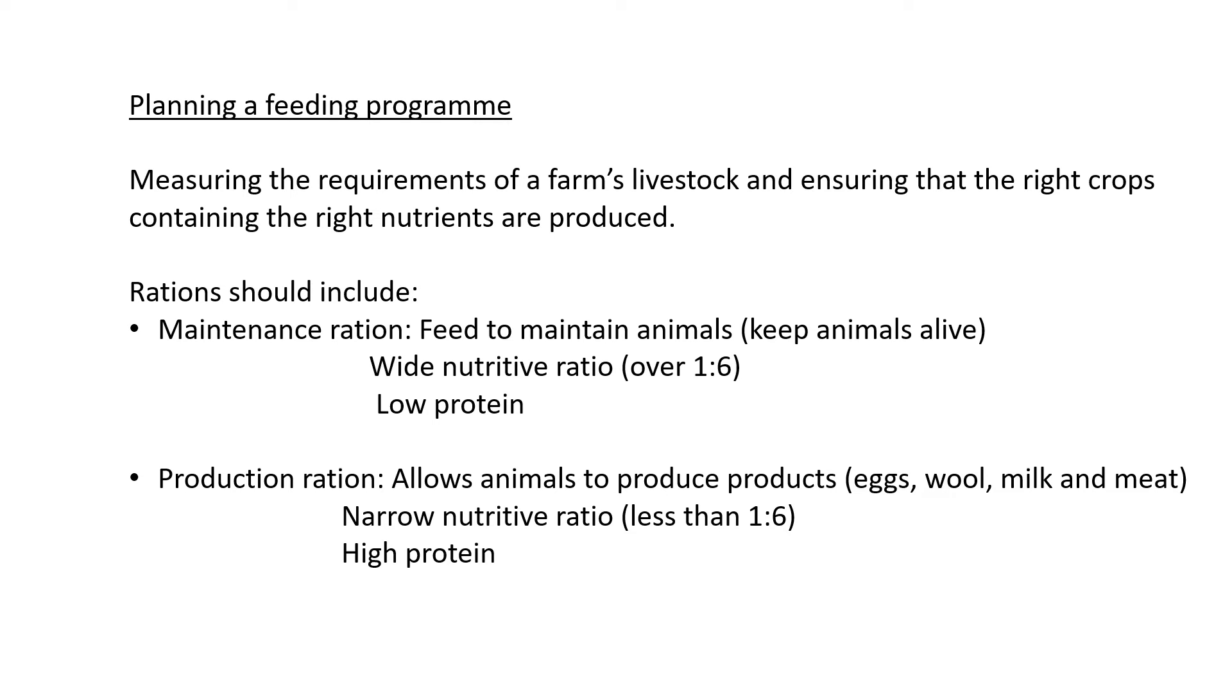When there is a wide nutritive ratio over 1:6, it means there's more carbs and fats in the food and it has low protein—that's just to maintain your animals, keeping them alive.